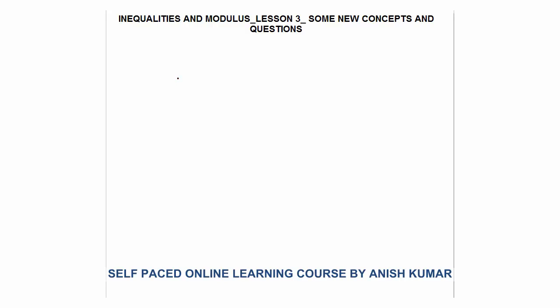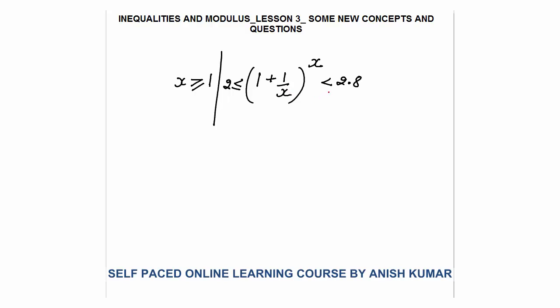The first concept I am going to discuss is: if x is greater than or equal to 1, the value of (1 + 1/x)^x always lies between 2 and 2.8. That is, it is always greater than or equal to 2 but less than 2.8. The condition is that x must be greater than or equal to 1.